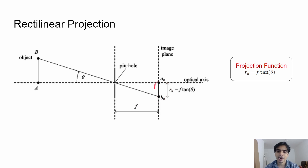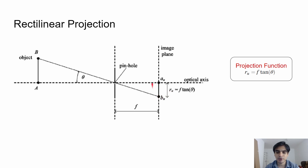The variable ru is simply the distance between the point of incidence and the optical axis. You can find the projection function by solving this geometry. The angle theta is the angle between the point of incidence and the optical axis. Applying tan(theta), where ru is the perpendicular and f is the base, you get the projection function: ru = f * tan(theta). This projection function tells us how an object from the 3D world should appear on the image sensor.